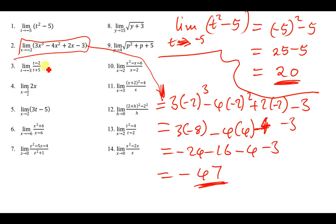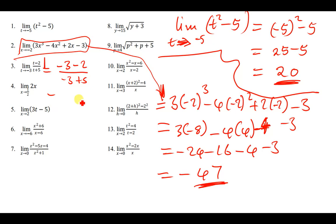For the third expression, we replace t with -3. We get (-3 - 2) over (-3 + 5), which is -5 over 2. So the answer is -5/2.